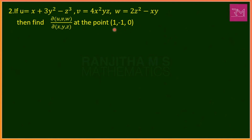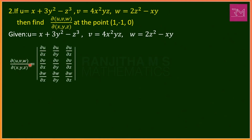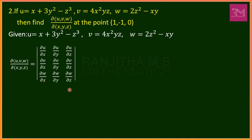The Jacobian formula is the 3×3 determinant of del u/del x, del u/del y, del u/del z, del v/del x, del v/del y, del v/del z, del w/del x, del w/del y, del w/del z. The first step is to find all these partial derivatives, then evaluate them at the point (1, −1, 0), and substitute into the formula.